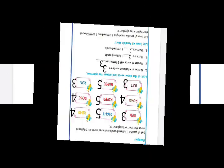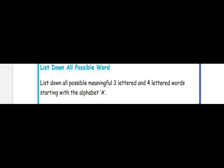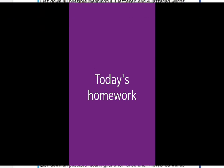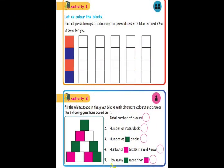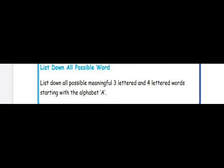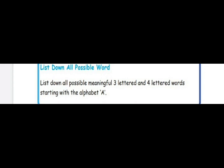Next, list down all possible meaningful three-letter and four-letter words starting with the alphabet A — this is also your homework. Today's homework includes activity one, activity two, and listing down all possible meaningful words — three-letter words and four-letter words with alphabet A. That's all about today's class, children. Thank you, have a good day.